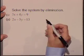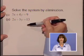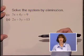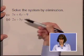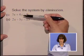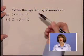With the elimination method, our goal is to get rid of a variable by adding these two equations together. We can see that's not going to happen at this point because our coefficients are not opposites.